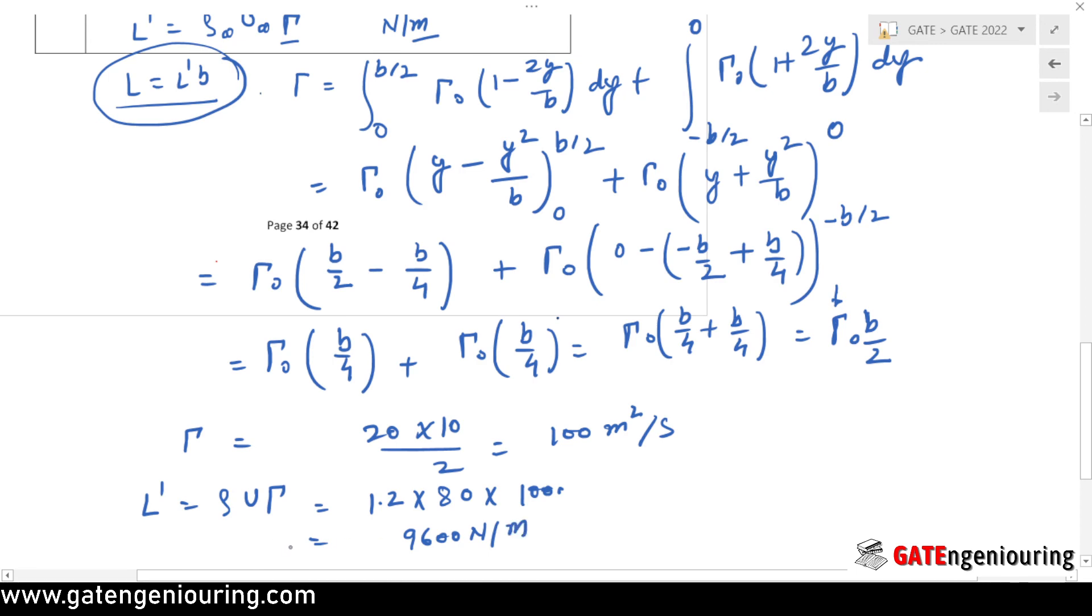What we have to find out is the total lift, so L is L' into b. 9600 into 10 is 96,000 newtons. This is the required answer. I hope this is the correct answer and you also got the same answer in your exam.